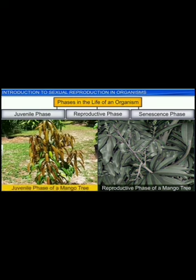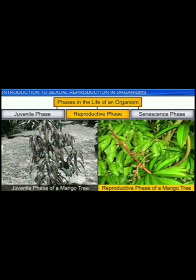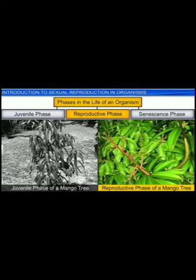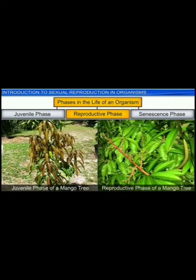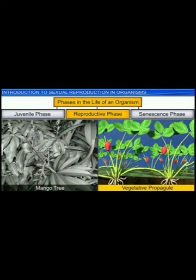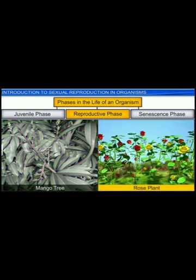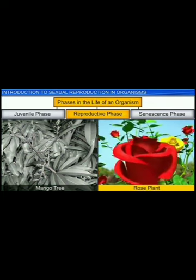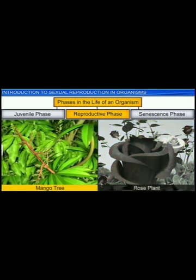The juvenile phase is succeeded by the reproductive phase in both plants and animals. In the case of plants, this phase is marked by the appearance of flowers or vegetative propagules such as runners. However, while some plants such as the rose flower throughout their lifespan, others such as the mango flower seasonally.